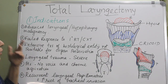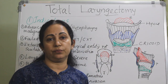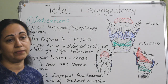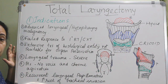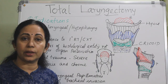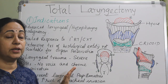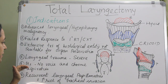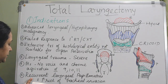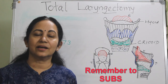The first indication is advanced laryngeal or hypopharyngeal malignancy — advanced in the sense of extension into the thyroid or cricoid cartilage or extra-laryngeal soft tissue. Second, failed response to primary radiotherapy or chemoradiotherapy, where surgery is done as salvage surgery. Third, extensive tumours of certain histological entities not suitable for organ preservation, such as chondrosarcomas, soft tissue sarcomas, or large cell neuroendocrine tumours. Fourth, severe laryngeal trauma where reconstruction is not possible. Fifth, patients having no voice and chronic aspiration due to cranial nerve palsies of CN 9, 10, and 11. Sixth, recurrent laryngeal papillomatosis with an increased risk of tracheal involvement.